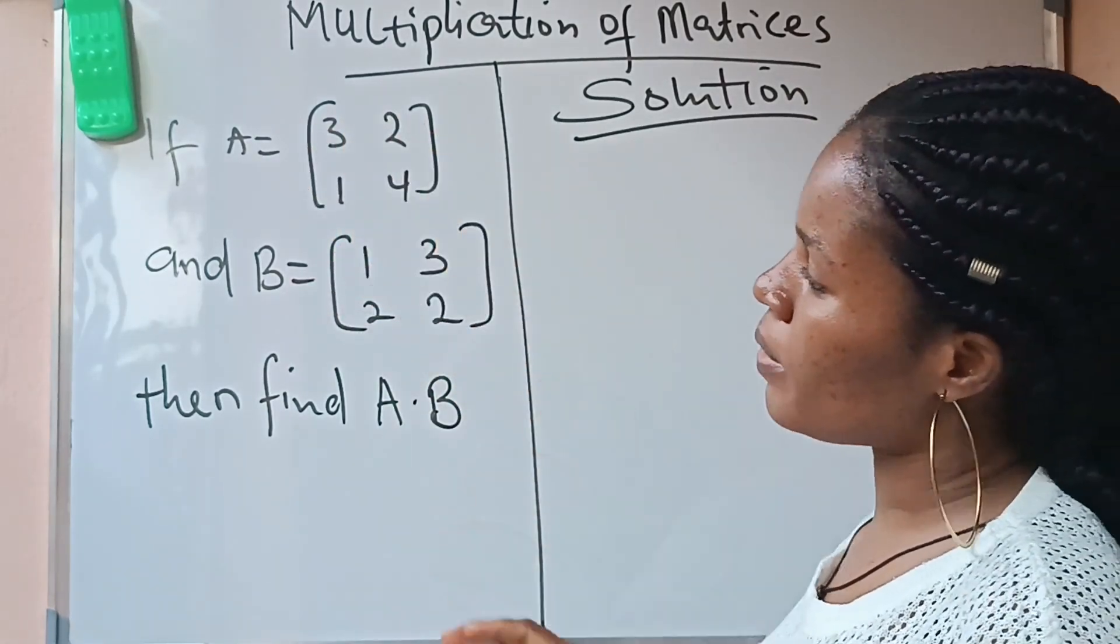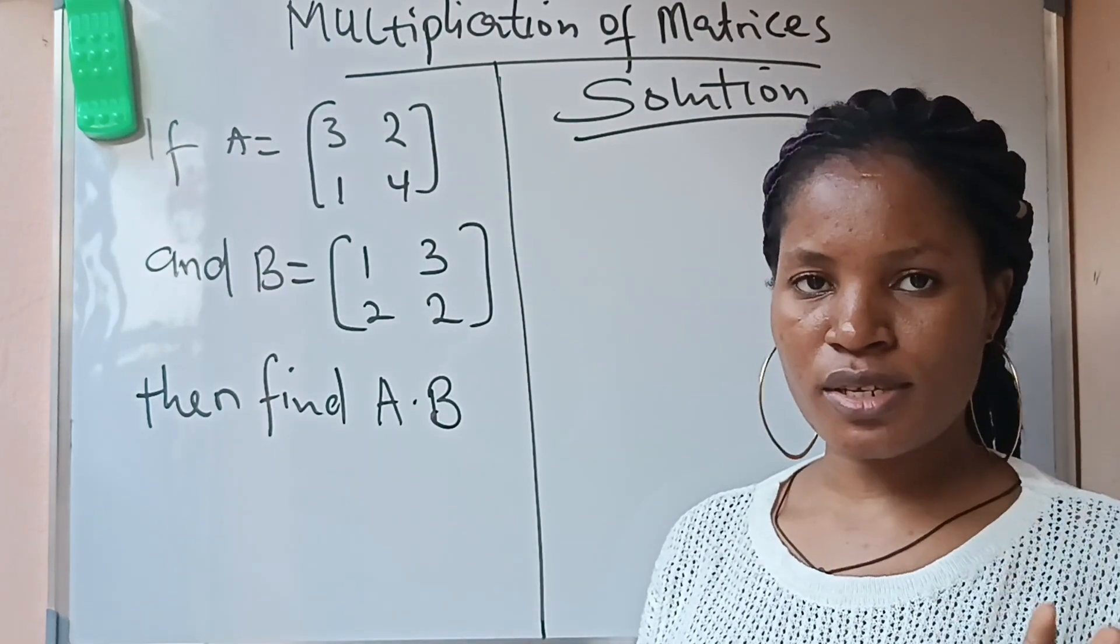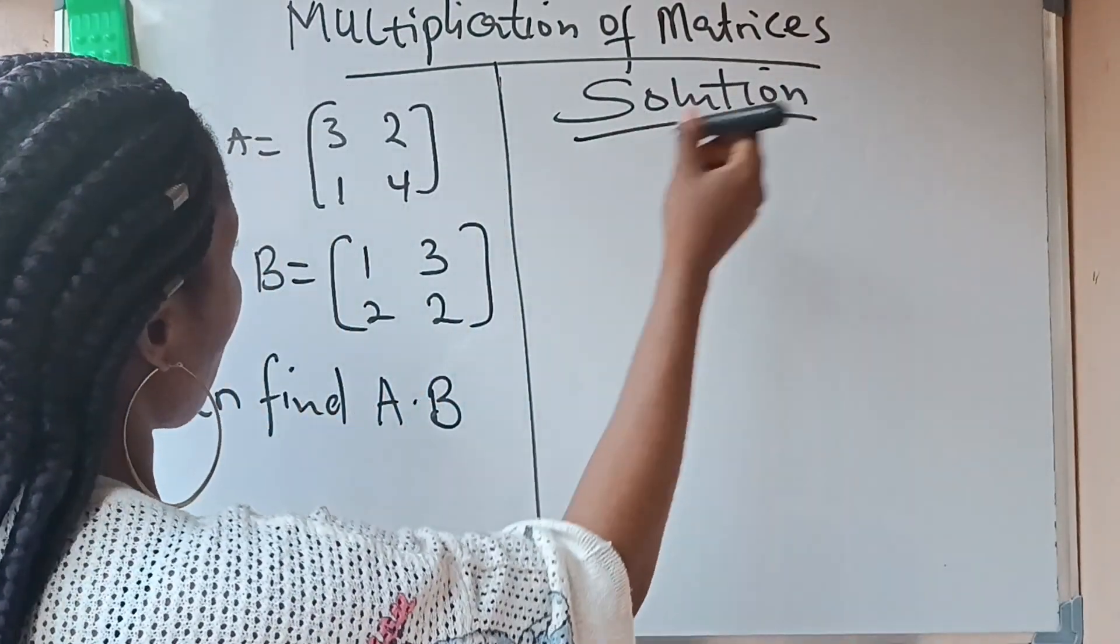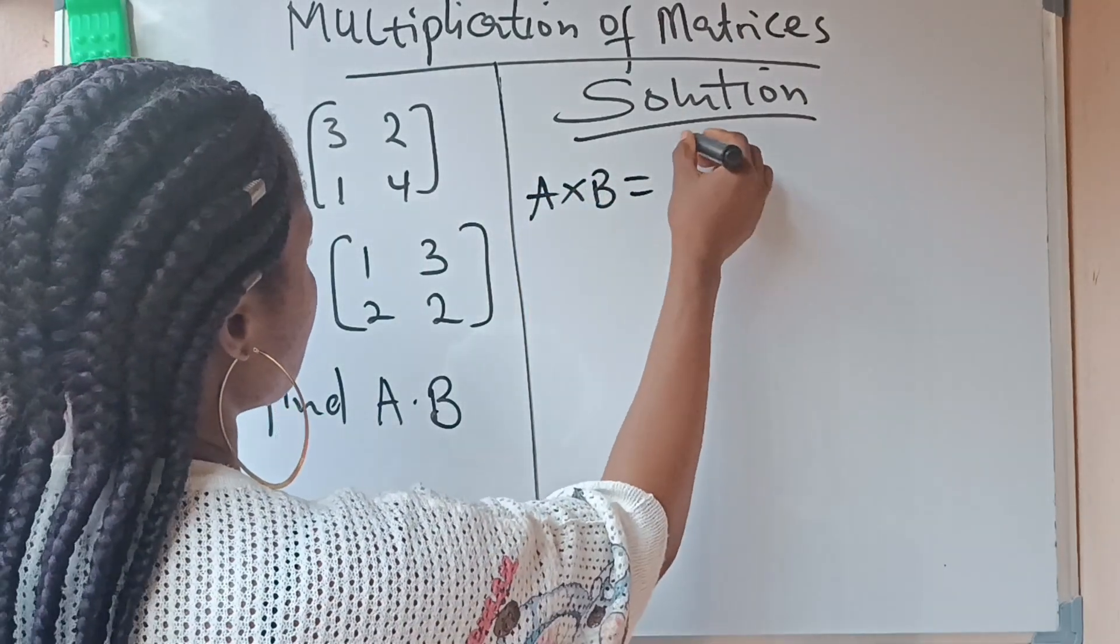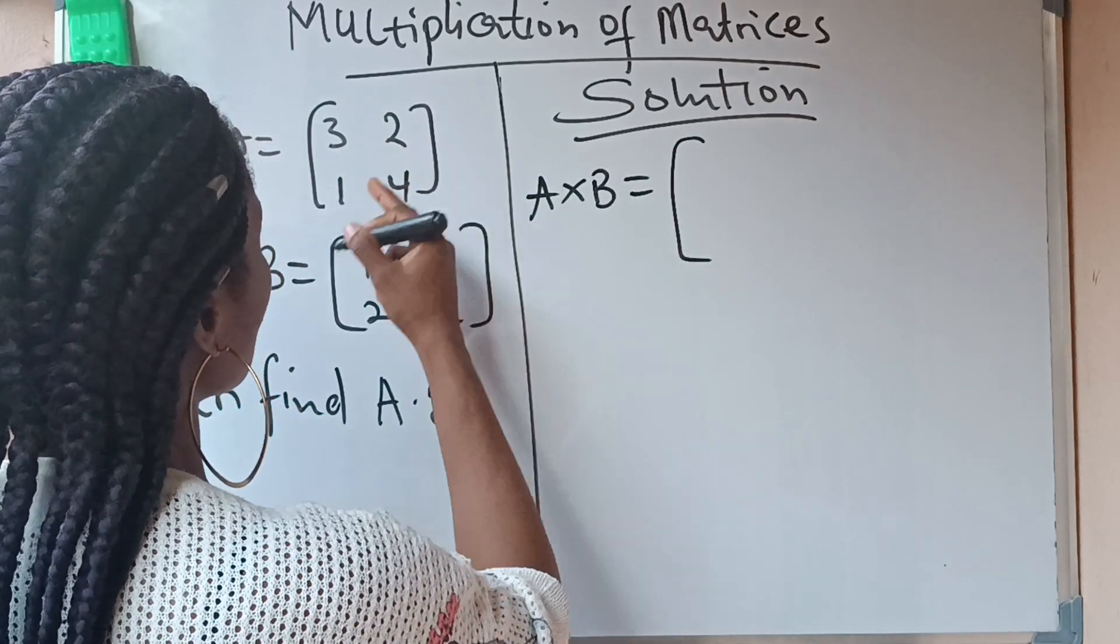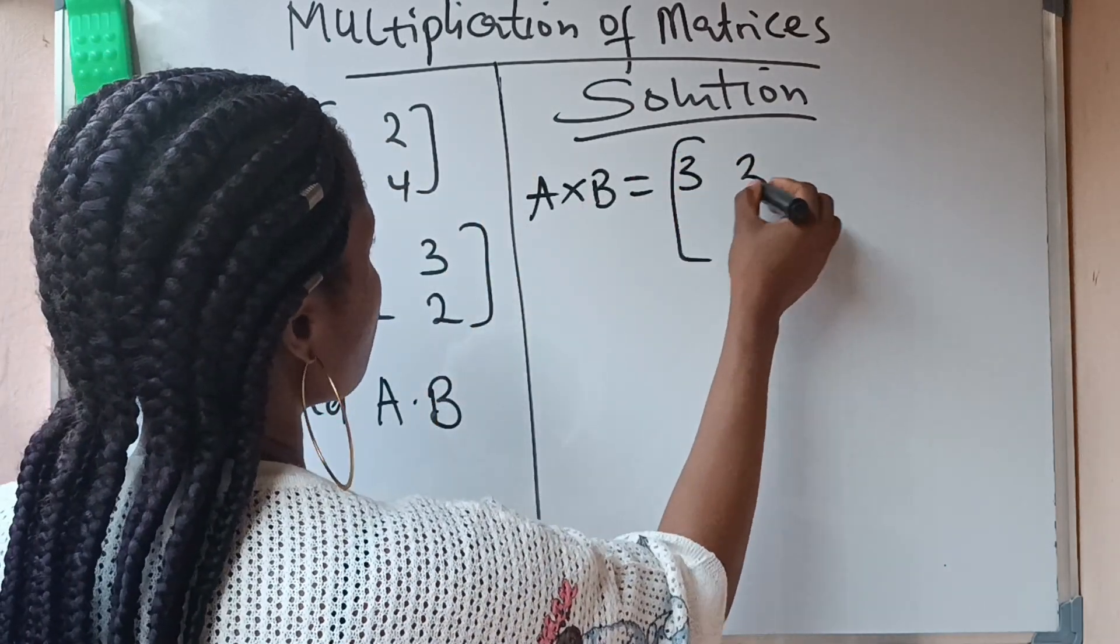We're given two matrices to multiply together. It's a very simple thing, now let's do it. We have A·B, or A times B, which is the same thing. This is our A: [3 2; 1 4].